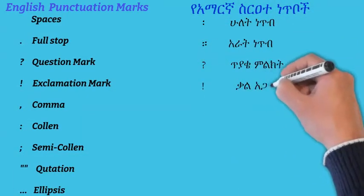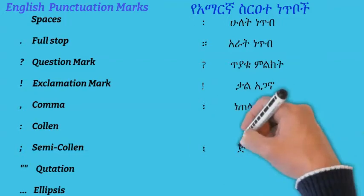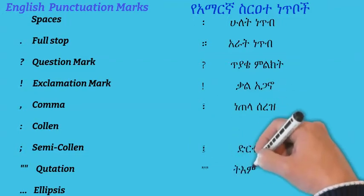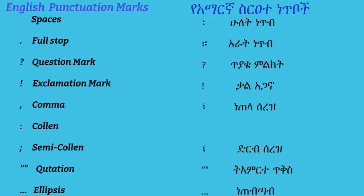In English, we have space, full stop, question marks, exclamation marks, comma, colon, semicolon, quotations, and ellipses.